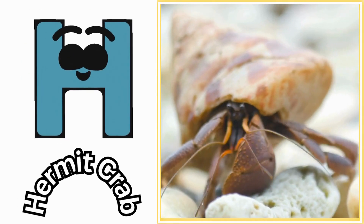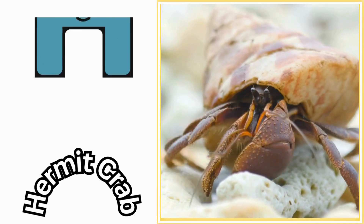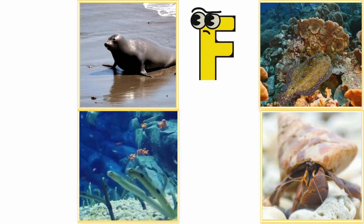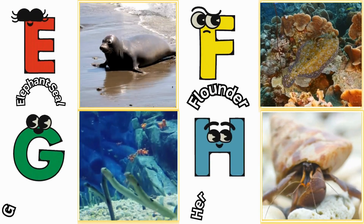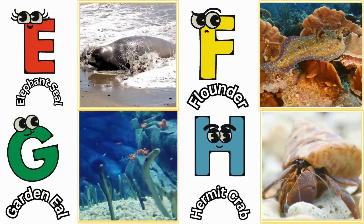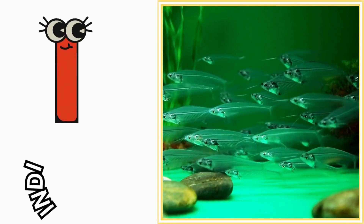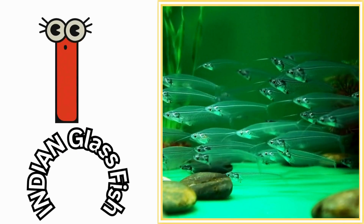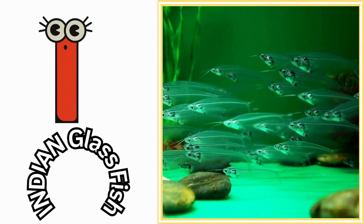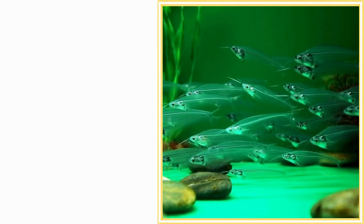H is for hermit crab. Hermit crab. I is for Indian glass fish. Indian glass fish.